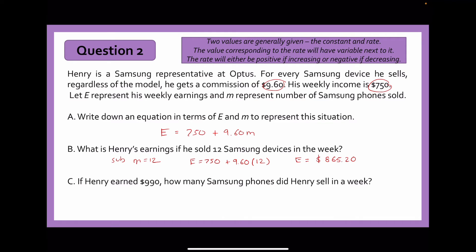For the last part of question two, you work backwards to find how many phones he sold. He earned $990, so subtract 750 from both sides, giving 240 equals 9.60M. Dividing both sides by 9.60, M equals 25 Samsung phones sold.